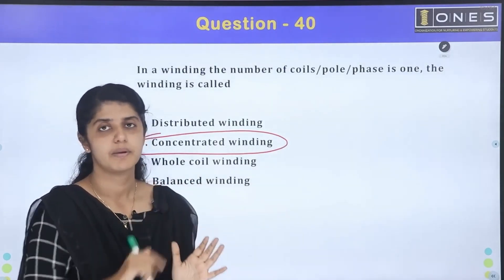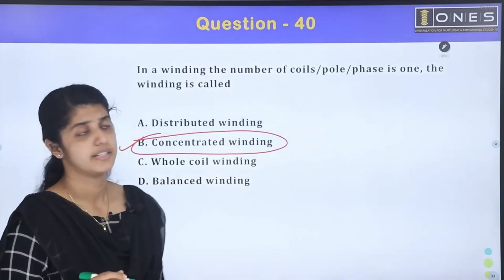In the pole, it doesn't float. It doesn't have to be splicing. It means concentrated winding.